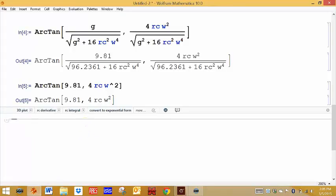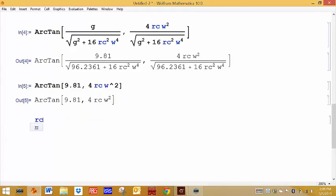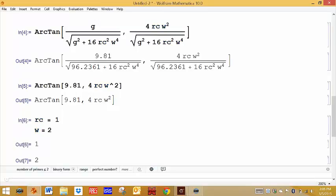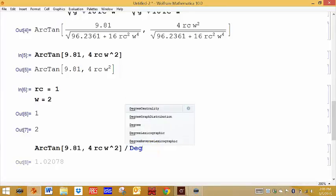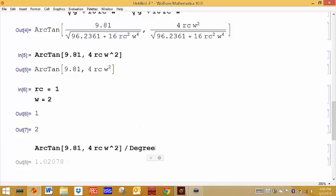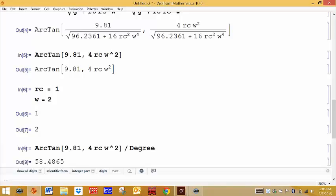So if you want to get a number, we'll pick some values for Rc. We'll let that be one. And we'll let the W, which is theta dot sub zero, let that be two. And execute that. And then we'll ask for the arc tangent. So I'll just copy and paste. Remember that those are in radians. So if you don't want radians, you just divide by the degree, which is built in. Or converted, whatever. It's probably easiest to use your calculator for that. But anyway, so that'll be 58 degrees is where it would lift off.